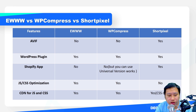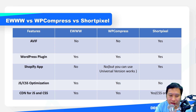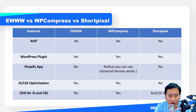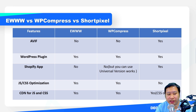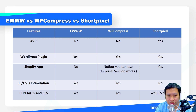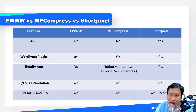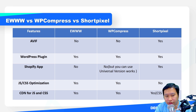All three plugins have a WordPress plugin. For Shopify, Ewww does not have a Shopify app — in fact, it only works with WordPress. For WP Compress, they do have a universal version where you can put a code in the header and then serve your images through their CDN, so it works on any kind of site as long as you can insert code in the header.